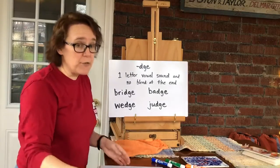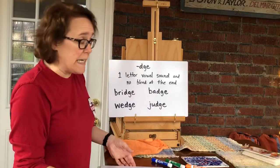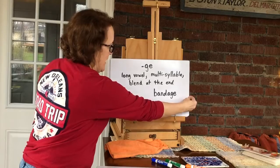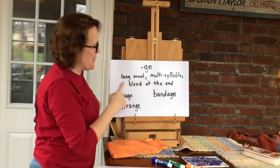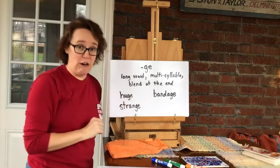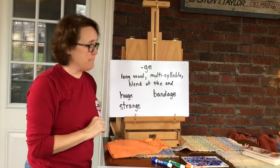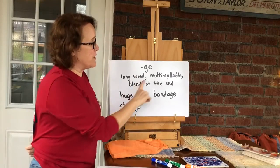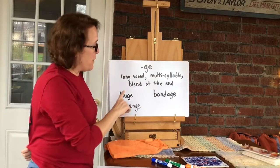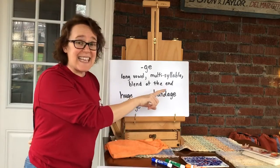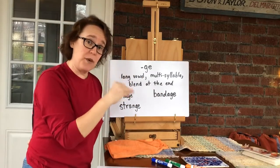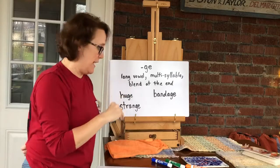So when do we use G-E? Everywhere else. We use G-E if it's a long vowel sound. We use it if it's a multi-syllable word. And we use it if there's a blend at the end — so it's not just the J, but another sound with the J at the end.